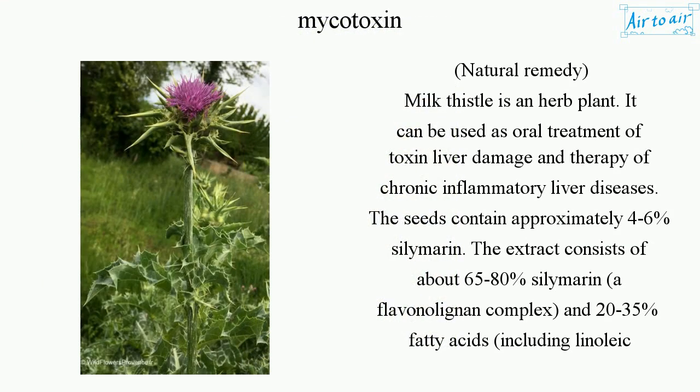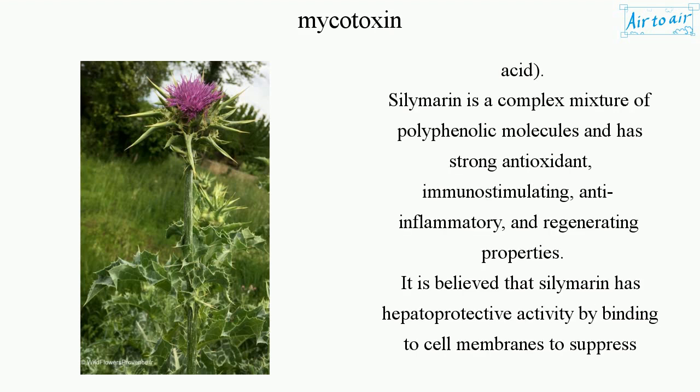A natural remedy is milk thistle, an herb plant that can be used as an oral treatment for toxin-related liver damage and therapy of chronic inflammatory liver diseases. The seeds contain approximately four to six percent silymarin. The extract consists of about 65 to 80 percent silymarin, a flavanolignan complex, and 20 to 35 percent fatty acids including linoleic acid.